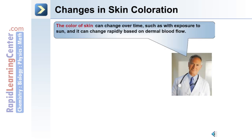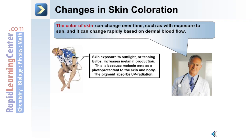Skin color can be a measure of how healthy an individual is, and the color of the skin can change over time, such as with exposure to the sun, or rapidly, which is based on dermal blood flow. When the skin is exposed to sunlight or tanning bulbs, there is an increase in the production of melanin, because melanin acts as a photoprotectant to the skin and body — the pigment itself absorbs UV radiation.